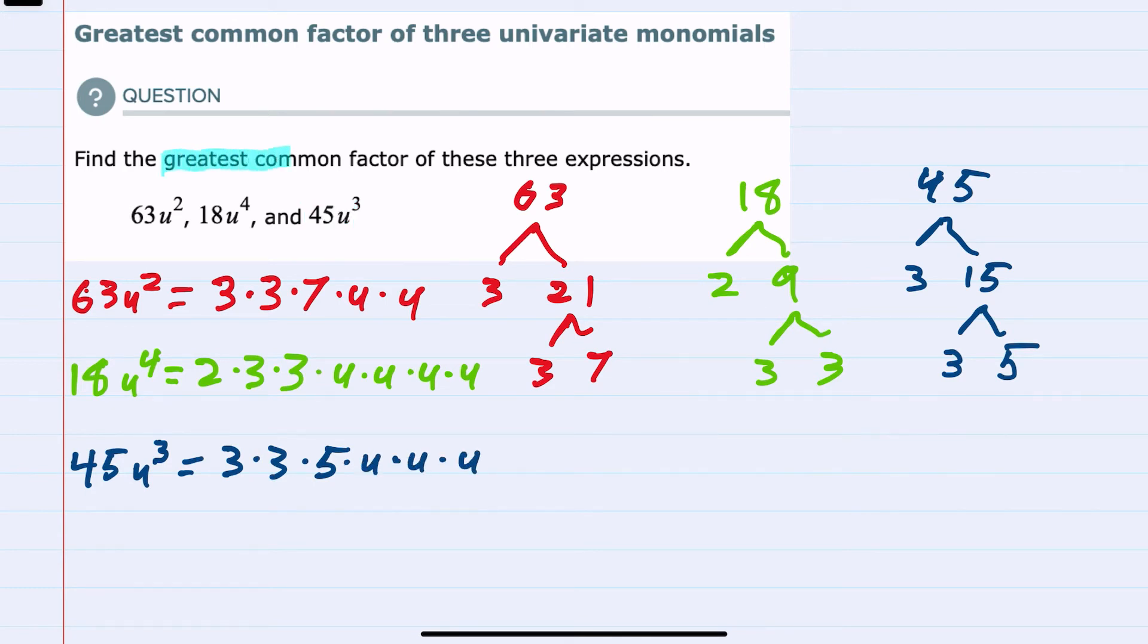And now since we are looking for the greatest common factor, we're looking for factors that each one of these have in common. I could start by seeing that each one of them has a 3, and then each one of them actually has a second 3. That's it for the numerical part. For the variables, they all have a u, and in fact, they all have at least two u's that they share.